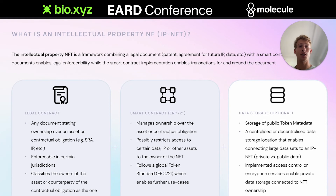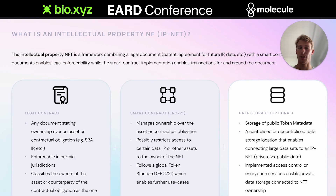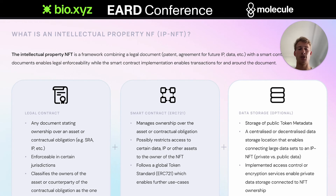To recap: we have a legal contract which ensures enforceability in a jurisdiction. It references a smart contract, which also references the legal contract. The smart contract manages ownership and counterparties in the contract, making it very easy to transfer. Another upside is that entities working on-chain, like decentralized autonomous organizations — DAOs — can actually own those assets on-chain, because they might not have a bank account or address yet. They could be a loose group of people interested in a certain area who want to fund research and then own this asset on-chain and manage it via their DAO, which would not be possible without the IP NFT framework.